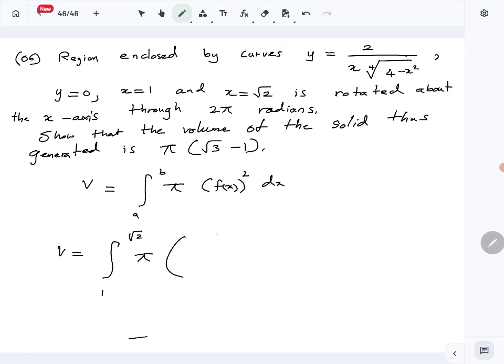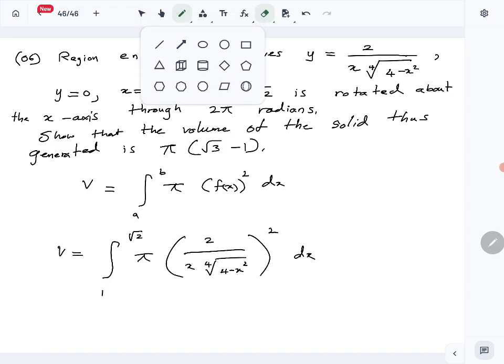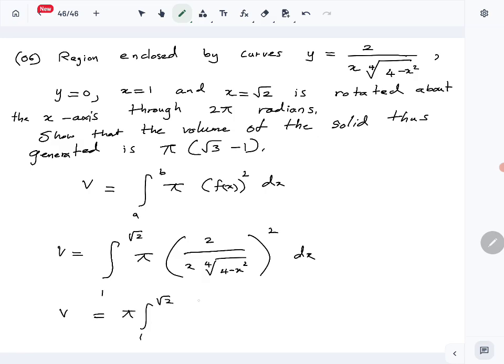So volume is given by the integral from 1 to square root 2 of π times the whole thing squared: 2 over x fourth root of 4 minus x squared, whole thing squared, dx. Now let's simplify. From 1 to square root 2, take π outside, then you have 4 over x squared.